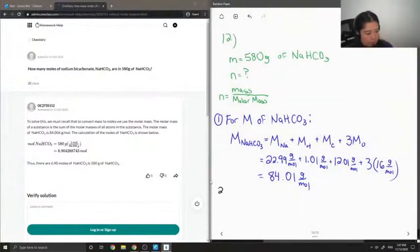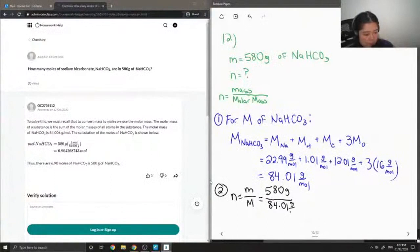So the second part of this answer, I need to solve for the number of moles of sodium bicarbonate in 580 grams of the sample. So now I can do number of moles equals mass over molar mass. The mass was given in the question as 580 grams, and the molar mass is what we calculated in the previous step, 84.01 grams per mole.